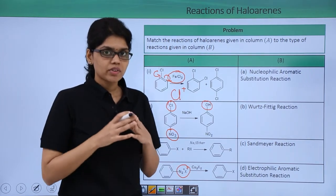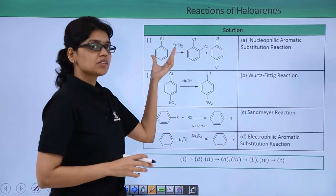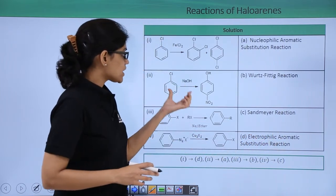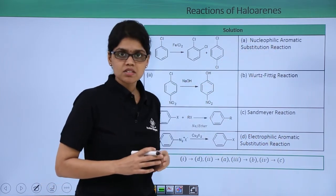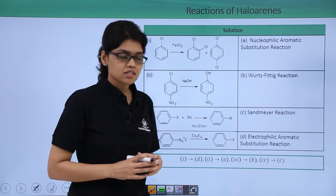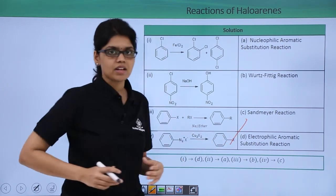I hope you are very clear on how we have arrived at this particular solution. So to summarize, we can see that the first reaction is an example of electrophilic aromatic substitution reaction. Second reaction is a nucleophilic aromatic substitution reaction. Third reaction is nothing but Wurtz-Fittig reaction. And the last reaction which involves diazonium salt is a Sandmeyer reaction.